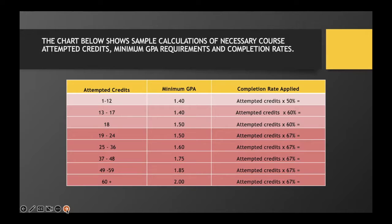There are three completion rate thresholds: 50% when you are from one credit to 12 attempted credits, 60% when you are from 13 to 18 credits, and finally 67% from the time you are at 19 credits all the way up to 60 plus and beyond. This is the standard that you must complete every single semester.